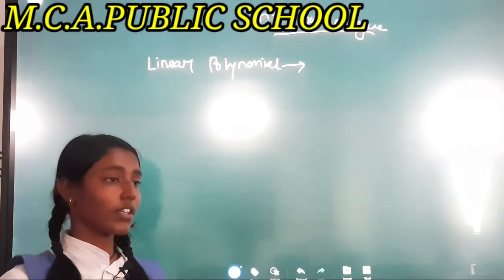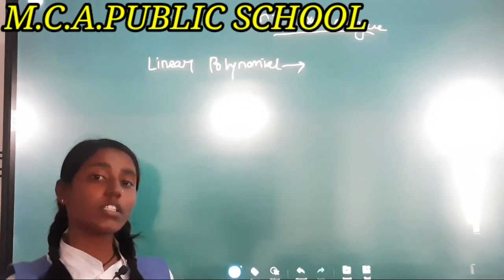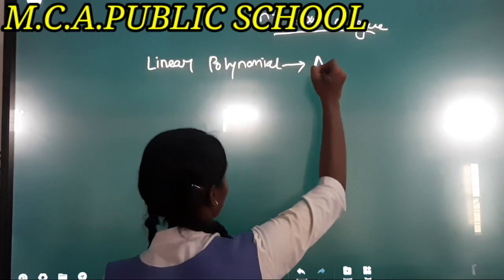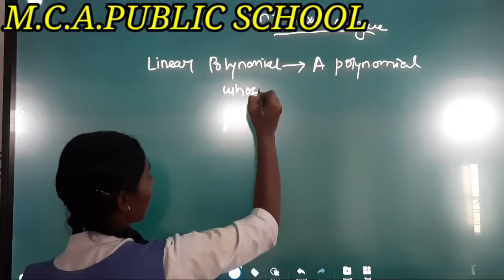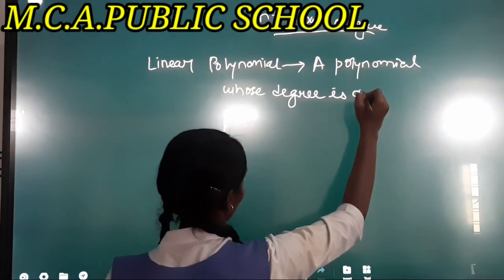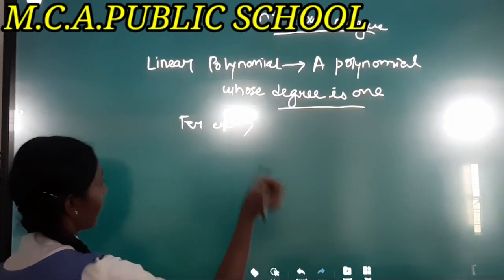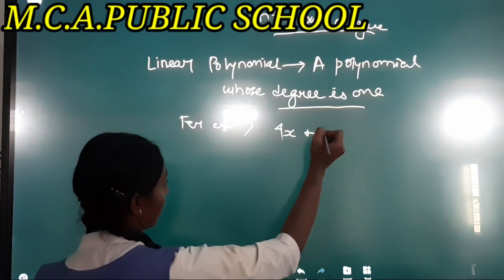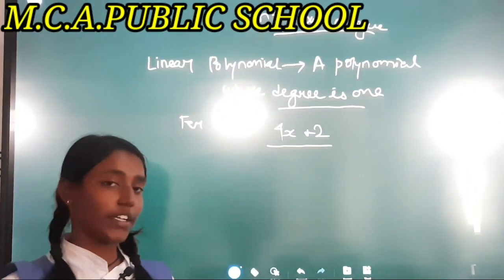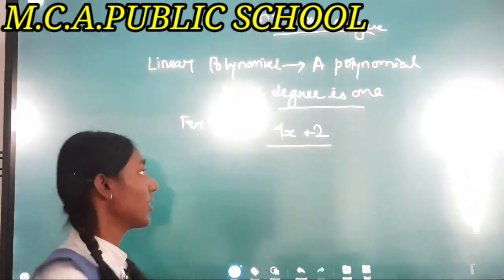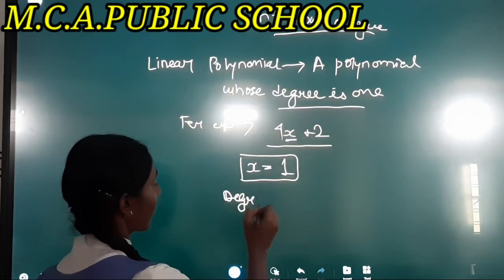The first type is the linear polynomial. A linear polynomial is a type of polynomial whose degree is one — that is, whose highest power is one. For example, 4x + 2 is a linear polynomial because the variable is x and its highest power is 1, so the degree is one.